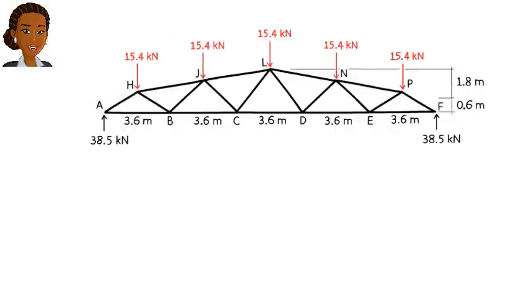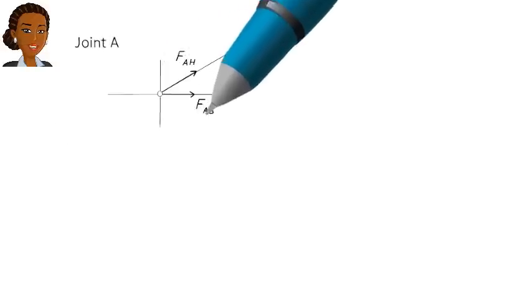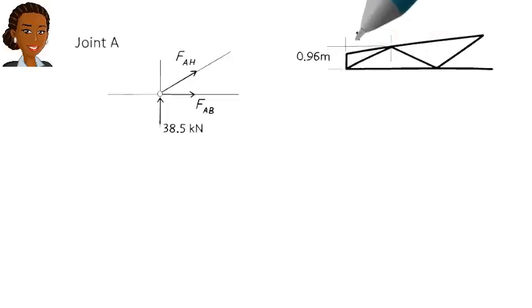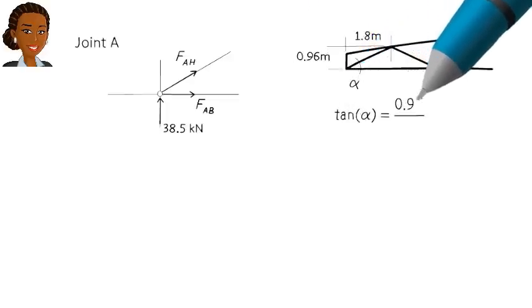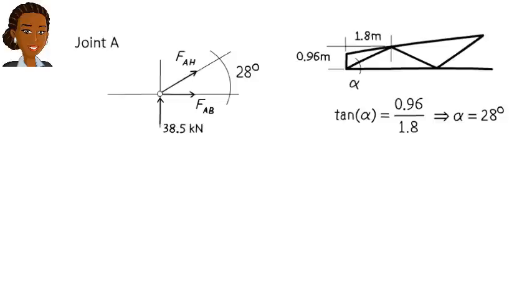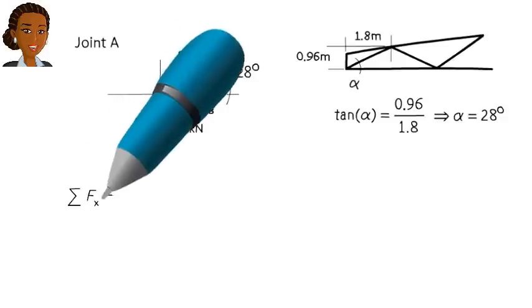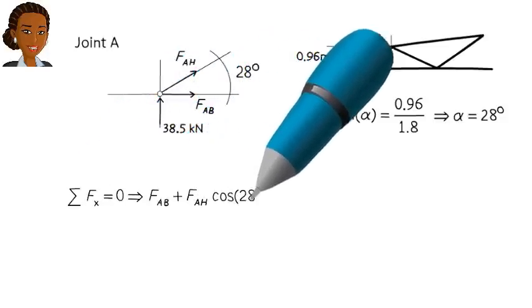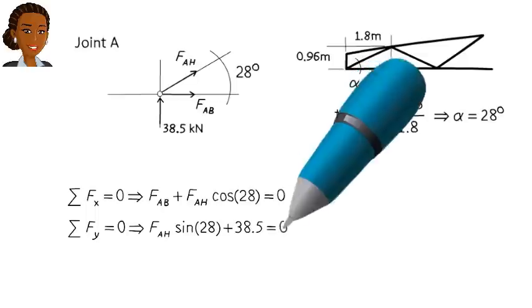We start at joint A. Here is the free body diagram of the joint. Summing the forces in the x and y directions, we can calculate the two unknown forces like this.